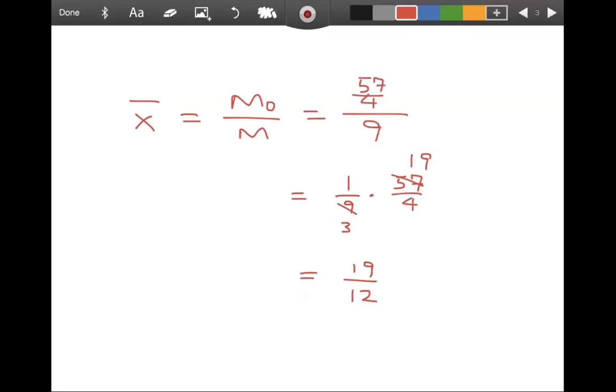So of course, the way to think about this is you've got this thin rod between x equals 1 and x equals 2. If you were trying to balance that thin rod, it would balance at the point where x equals 19 twelves. In other words, 1 and 7 twelths. Almost in the center, but not quite.